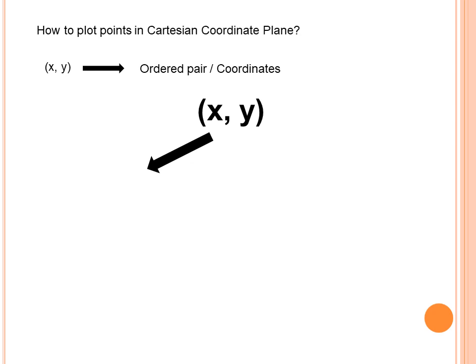The x — which is the first number in the coordinates — is called the x-coordinate. Another term for x-coordinate is abscissa. Spelled A-B-S-C-I-S-S-A. For the second number, which is y, it is known as the y-coordinate, also known as the ordinate. Note that coordinates and ordinate are different terms.